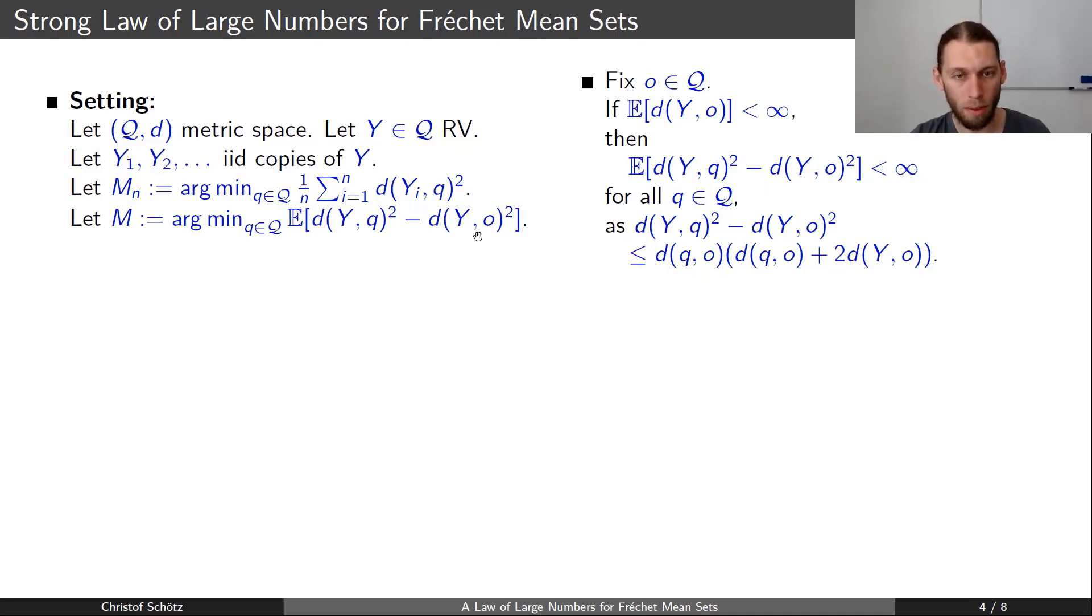So with this definition we only require a first moment basically, and not a square, a second moment here. This is basically due to the triangle inequality and will be important in a moment.